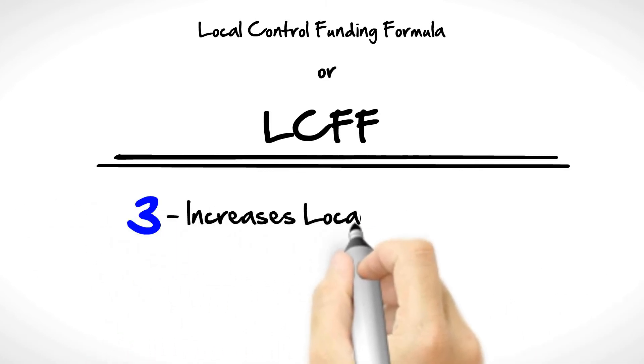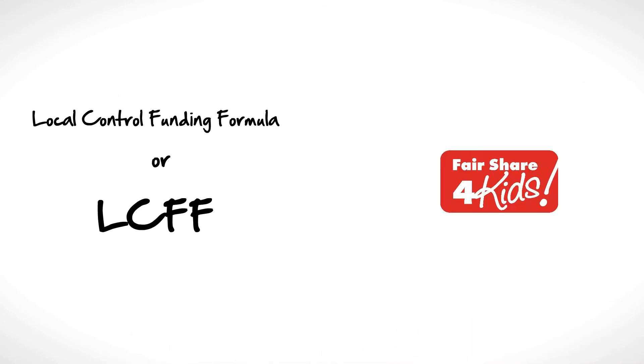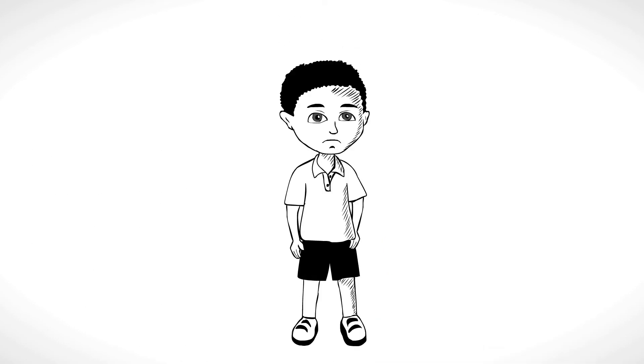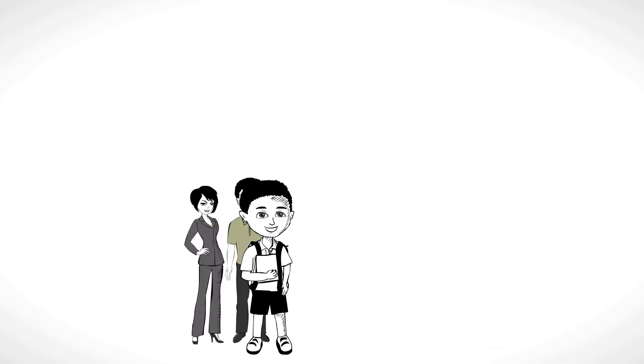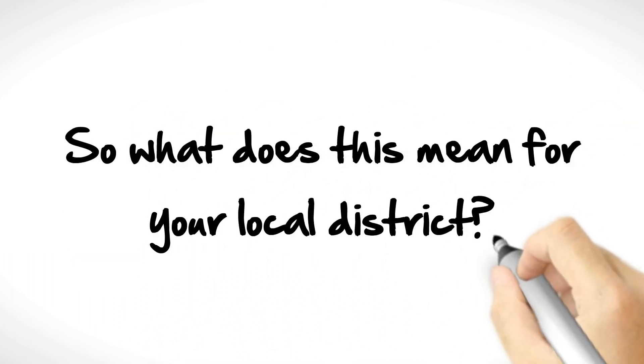Three: Increases local control, giving local school districts more options on how to best use funds. Fair Share for Kids supports this plan, so long as low-income students receive the support they need and parents have a voice on how monies are spent. So what does this mean for your local district?